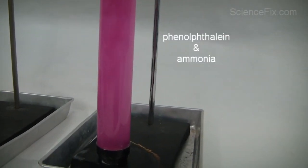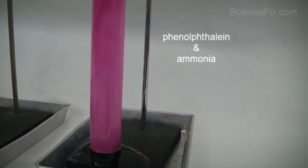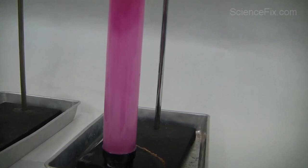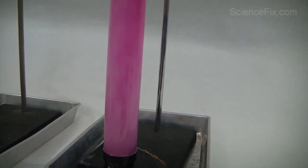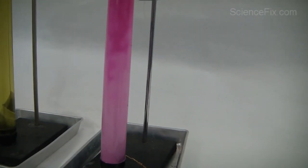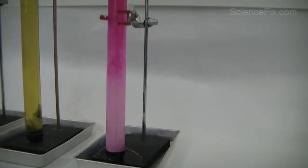In this tube is water, and some ammonia, and some phenolphthalein. When the Alka-Seltzer tablet is dropped into this tube, it slowly over time changes from this pinkish color to a more clear color. This one took a little bit longer for the change to occur.